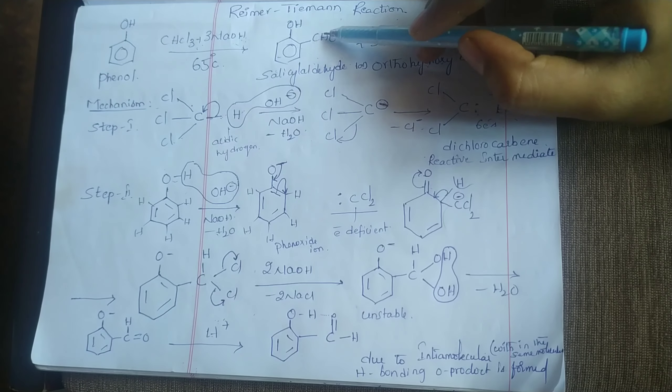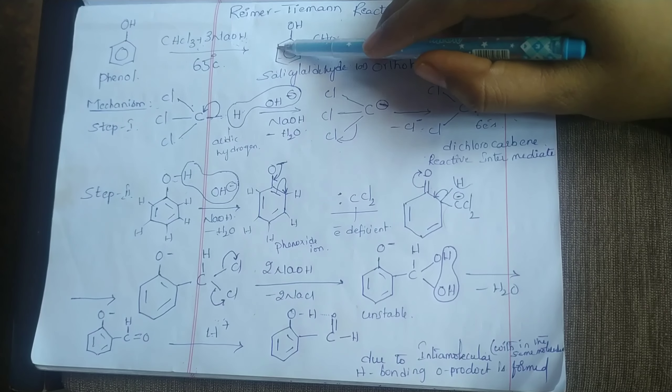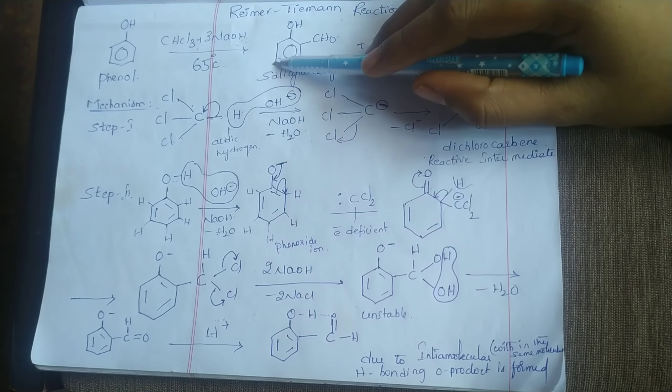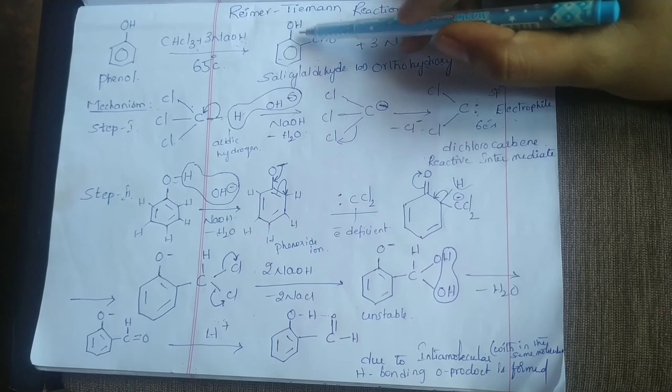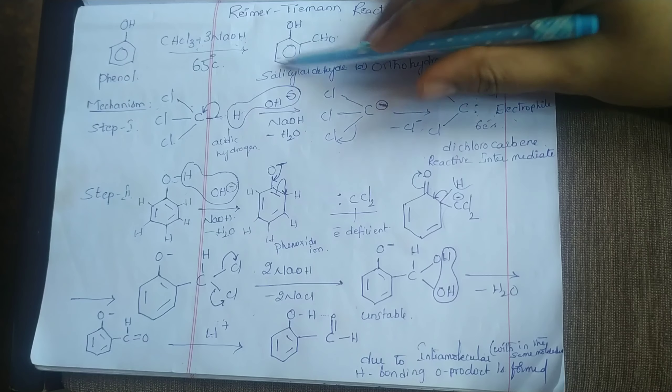So ring is benzaldehyde ring and substituent is hydroxyl group. In this ring, these two sides are ortho position, these two sides are meta position, and this is para position. So we will write orthohydroxybenzaldehyde.